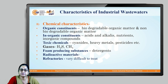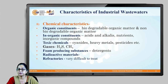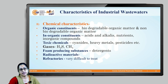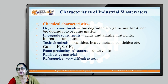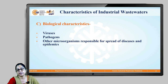Chemical characteristics include organic constituents — both biodegradable and non-biodegradable matter — as well as acids, alkalis, nutrients, and toxic chemicals like cyanide, heavy metals, and pesticides. Some gases like hydrogen sulfide and methane may be present, along with foam-producing substances and radioactive materials, especially from uranium mines and nuclear fuel processing units. Refractories are a very peculiar characteristic of industrial wastewater where conventional treatment is not sufficient to remove the constituent.